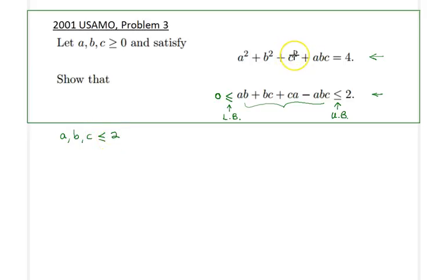Otherwise, even if one of them is greater than 2, this whole expression, the left-hand side, will definitely exceed 4, because a, b, and c are non-negative. So therefore we know that a, b, c will be in this range, obviously.